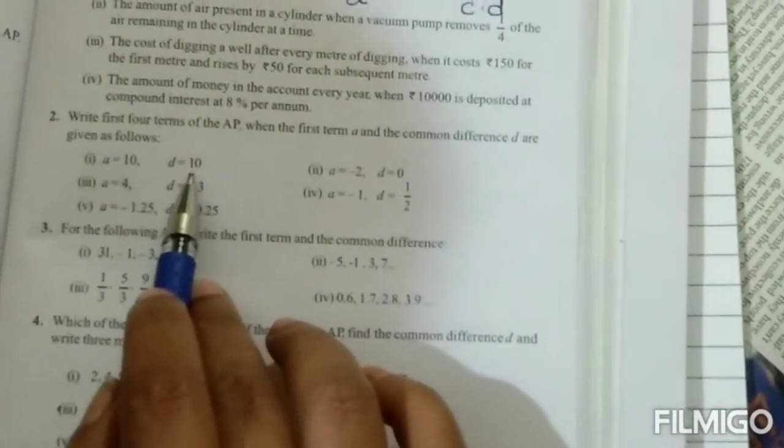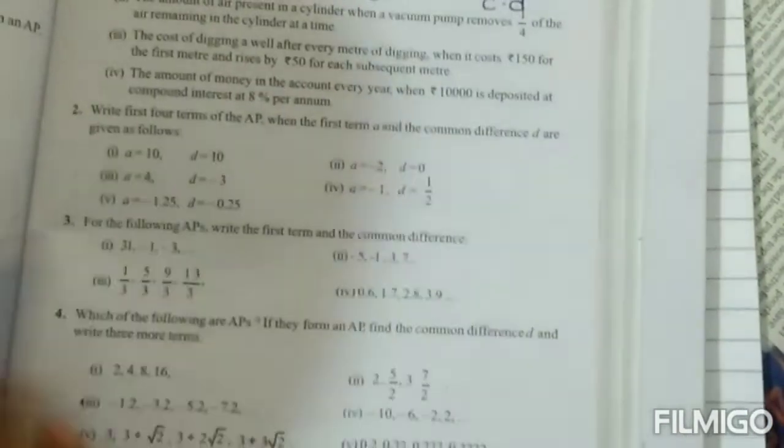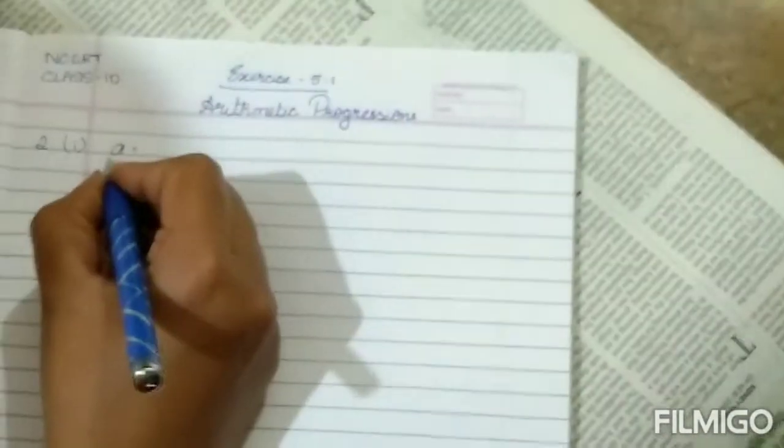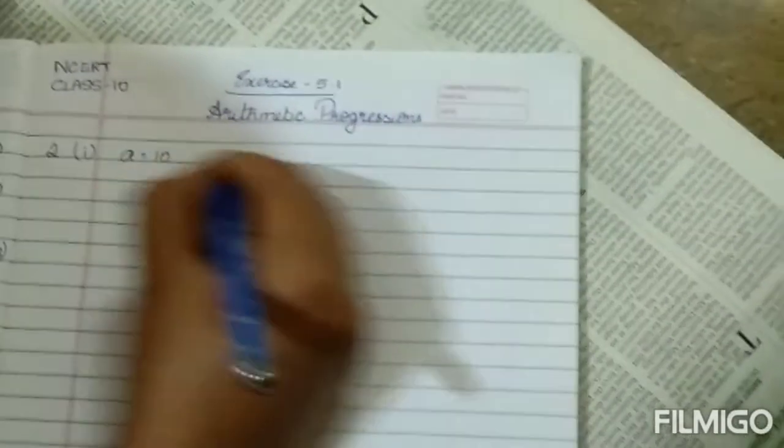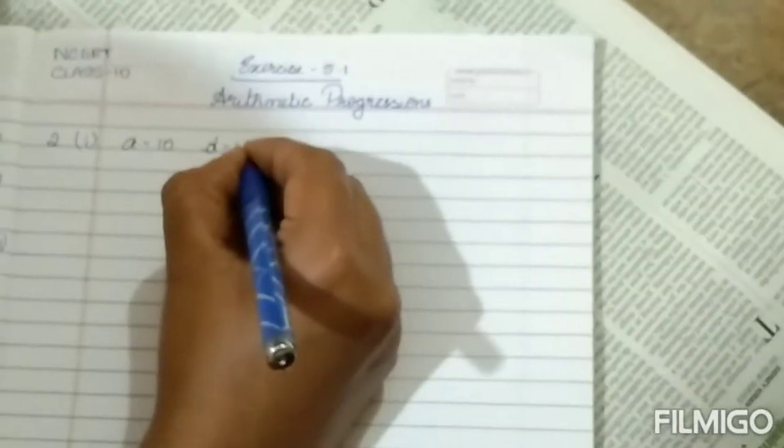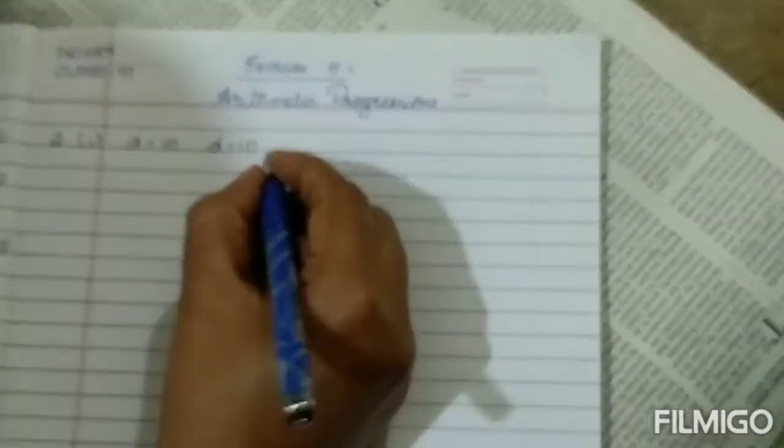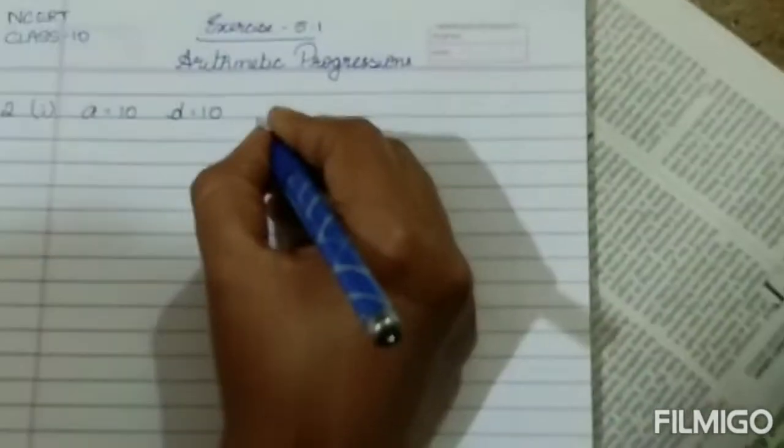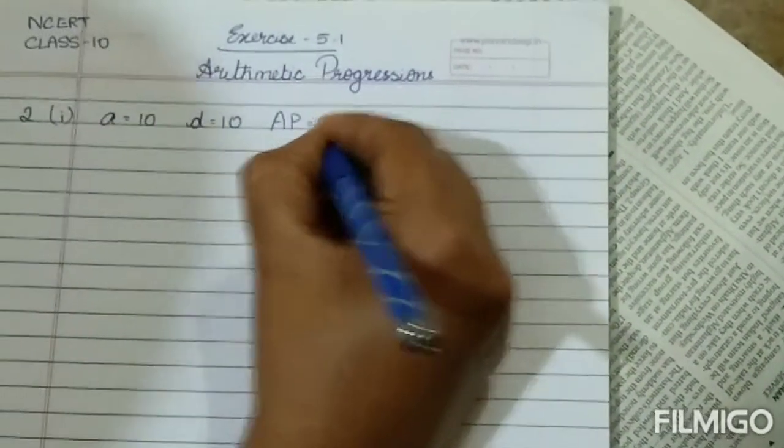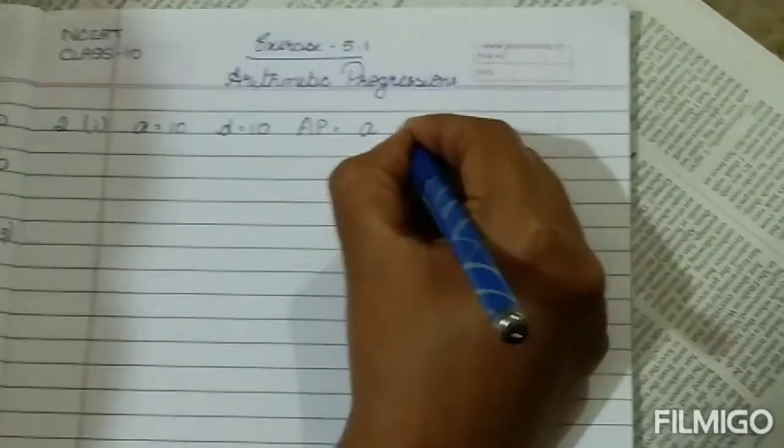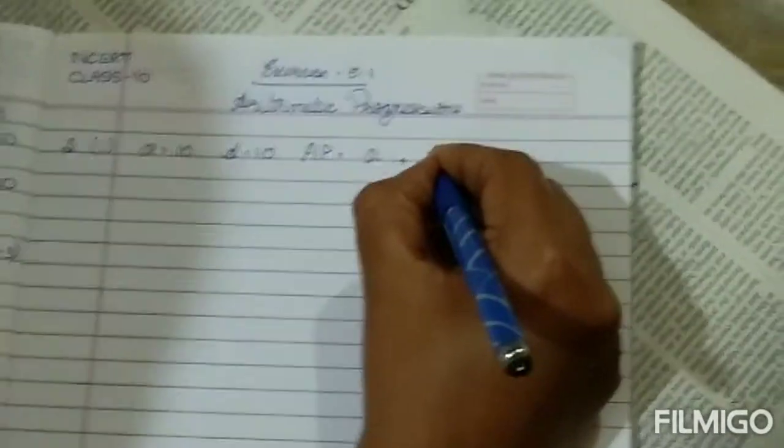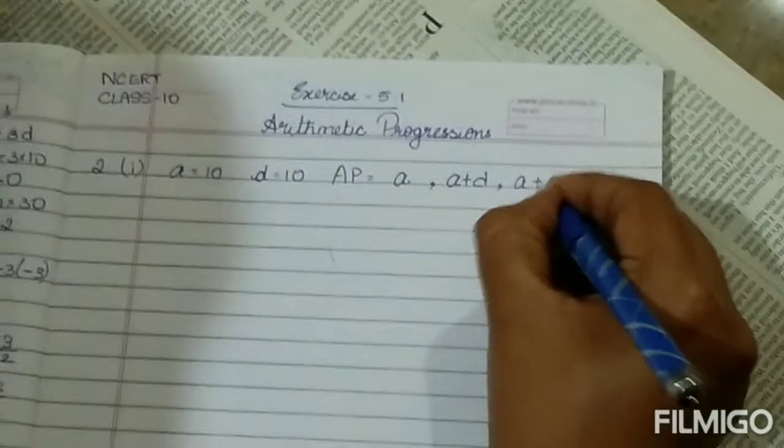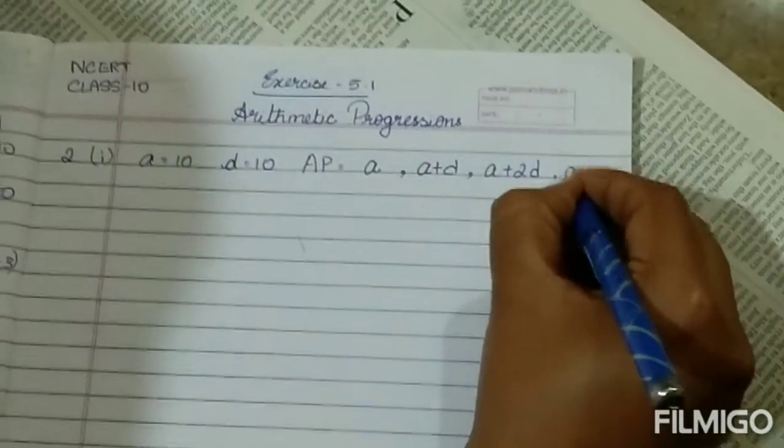First term and common difference. The first one I am going to do for you: a means first term, that is 10, and d means common difference, that is also 10. You are going to write down the general form to form AP: AP equals first term, next first term plus common difference, next a plus 2d, next a plus 3d.